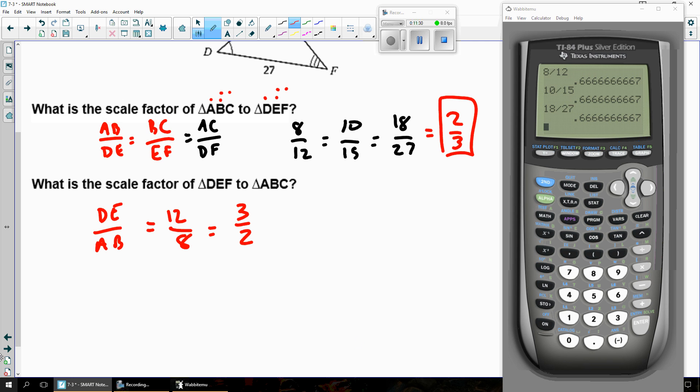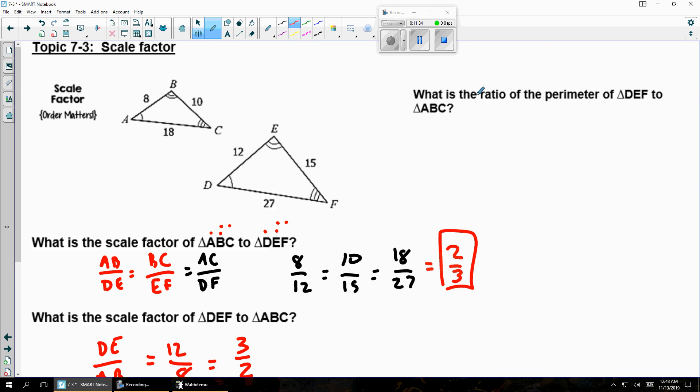Next question says, what's the ratio of the perimeter of DEF to ABC? What's the scale factor of DEF to ABC? The ratio of the perimeter works out exactly the same way, but we could count the perimeter and see. So if I add up the sides here, this is 12 and 15 and 27, 54. If I add up the perimeter over here, it's 8 and 10 and 18. And if I make a ratio in that order, it's 54 over 36, which reduces down to three-halves, just like the ratio of the scale factor.